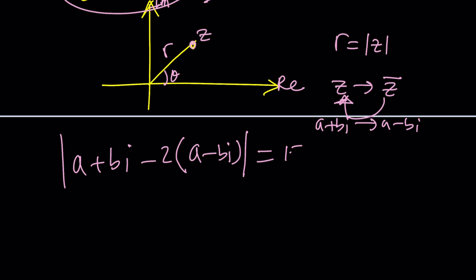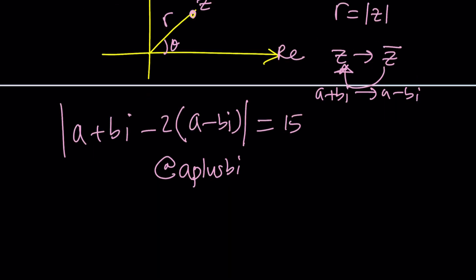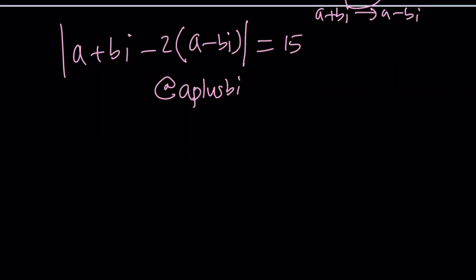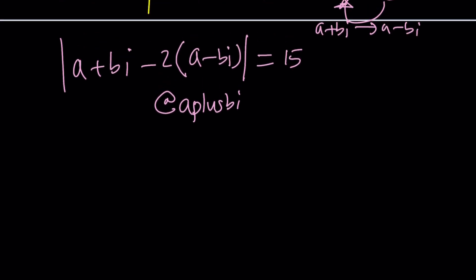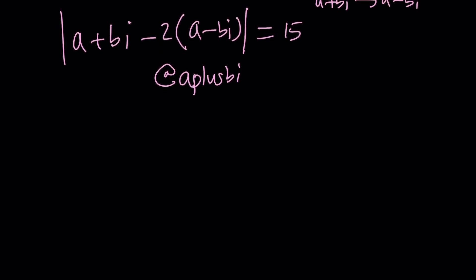Now I gotta tell you though, replacing z with a + bi may not always be a good idea, even though this channel is called A plus B I. It's not always a good idea because this looks like a locus problem to me. I'd rather replace z with x + yi. It's an easy conversion. Instead of a, you use x. Instead of b, you use y.